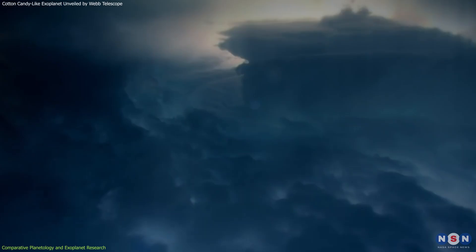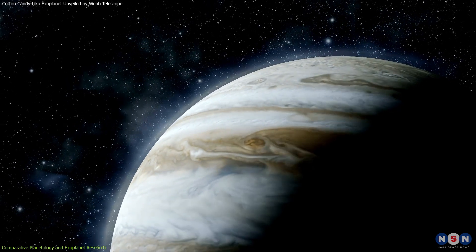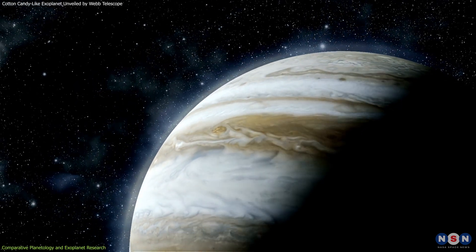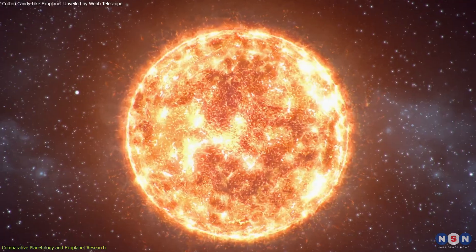For example, comparing this exoplanet's thick, fluffy atmosphere to the denser atmospheres of Jupiter or Saturn provides insights into how atmospheric characteristics are influenced by factors like core size, orbital distance, and stellar radiation.